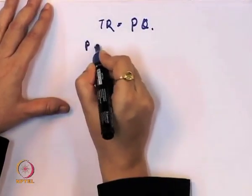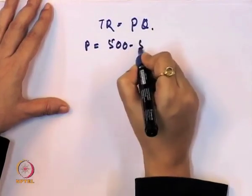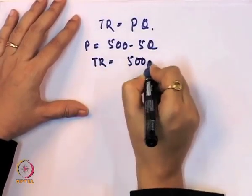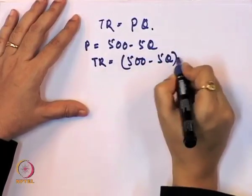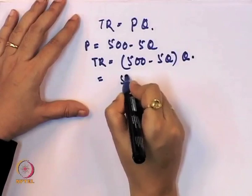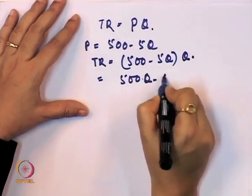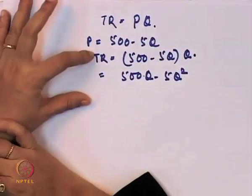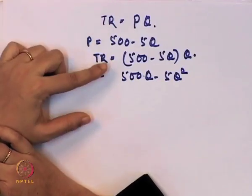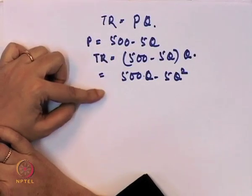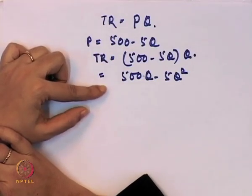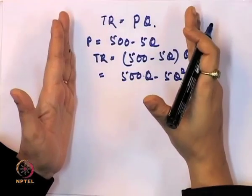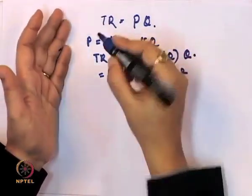Suppose we take P equal to 500 minus 5Q. Then total revenue is (500 minus 5Q) multiplied by Q, which comes to 500Q minus 5Q². So total revenue equals 500Q minus 5Q². Now, what is the role of optimization technique here — how can we use this optimization technique in order to maximize this total revenue?